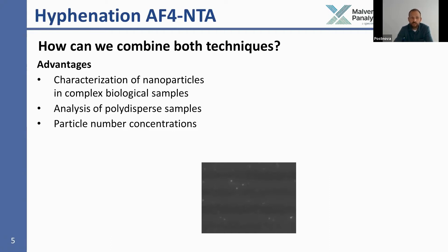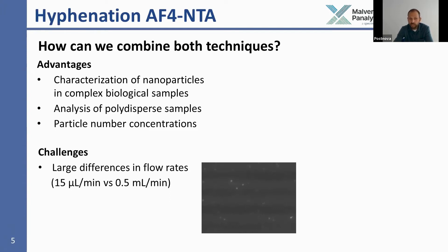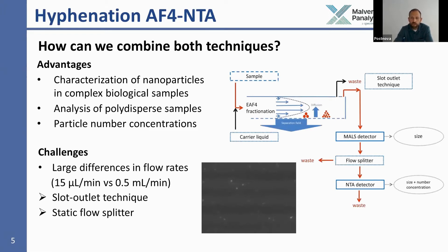Furthermore, we can obtain a real particle counting detector for AF4. The major challenge of combining both techniques is the large difference in flow rates: typically in AF4 the detector flow rate is 0.5 milliliters per minute, whereas NTA operates at very low flow rates, normally around 15 microliters per minute. We overcame this by using a slot outlet technique, reducing the detector flow rate from 0.5 to 0.15 milliliters per minute, and then further reducing it to roughly 15 microliters per minute after the MALS detector.